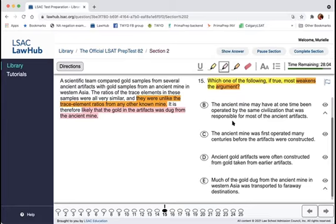And we would know that it would be the same kind of gold, that the ratios of trace elements would match because it's the same deposit that the ancient mine was tapping into. So A looks really promising, but we'll go through the rest of the answer choices. B, the ancient mine may have at one time been operated by the same civilization that was responsible for most of the ancient artifacts.